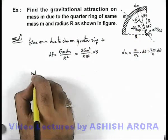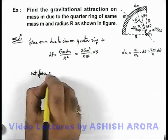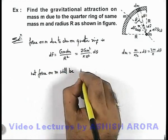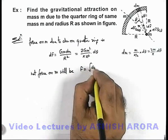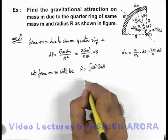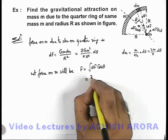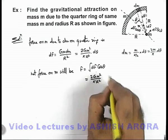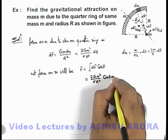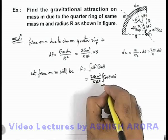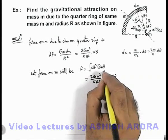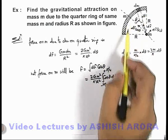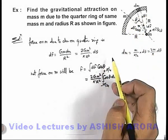So we can simply write that net force on m will be this can be given as integration of dF cos θ. If we substitute the values it will be 2Gm²/(πR²) cos θ d-theta and we'll integrate it within limits from -π/4 to +π/4 for the complete segment of this quarter ring.